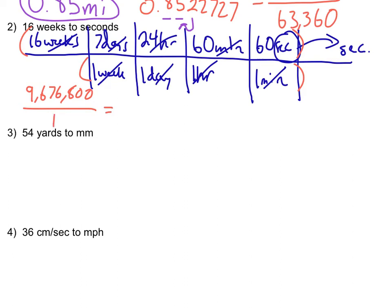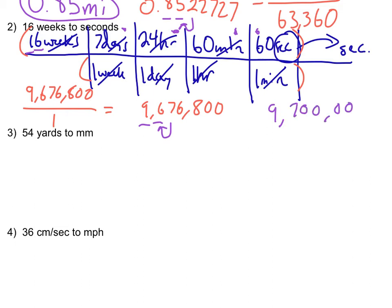Dividing by everything on the bottom — 1 × 1 × 1 × 1 — leaves me with 9,676,800. With correct sig figs, 16 weeks has two sig figs. All the others are conversion factors, so we don't use them. Rounding to two sig figs, my final answer is 9,700,000 seconds. The zeros here are placeholders.